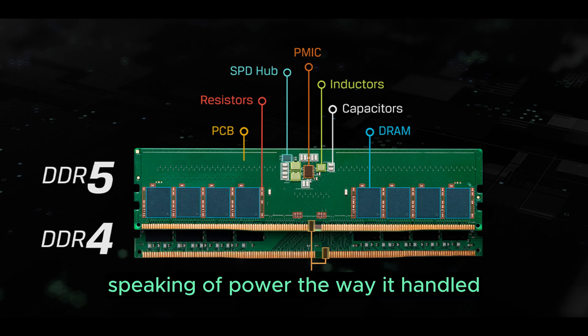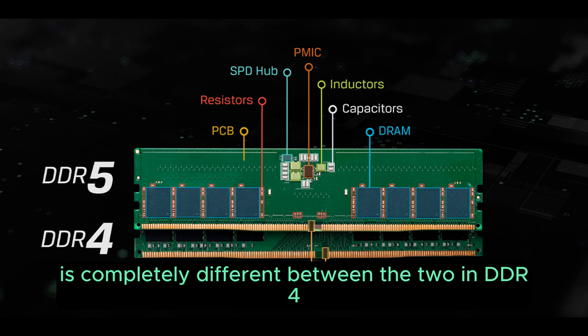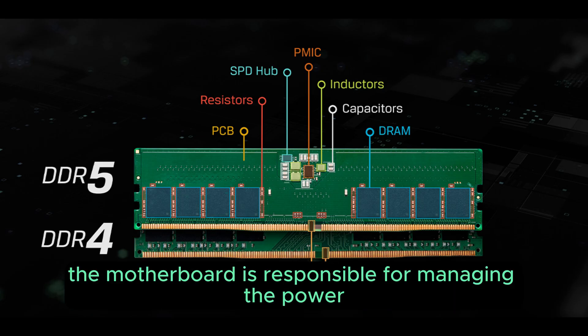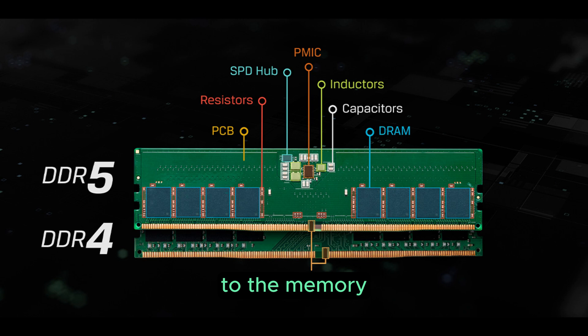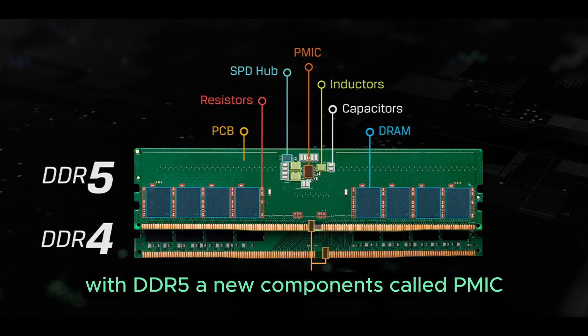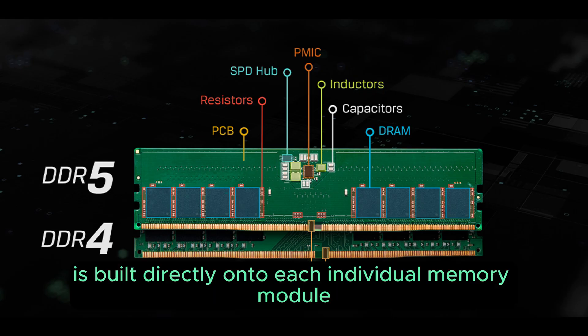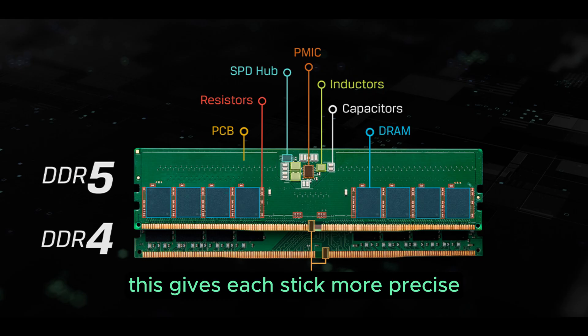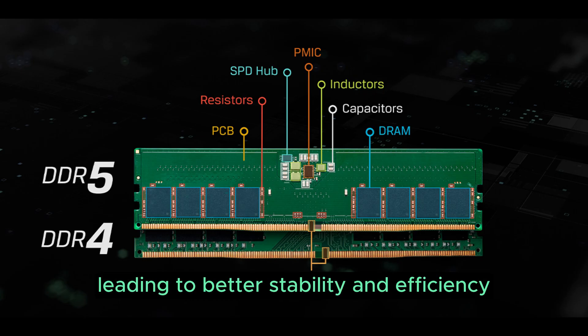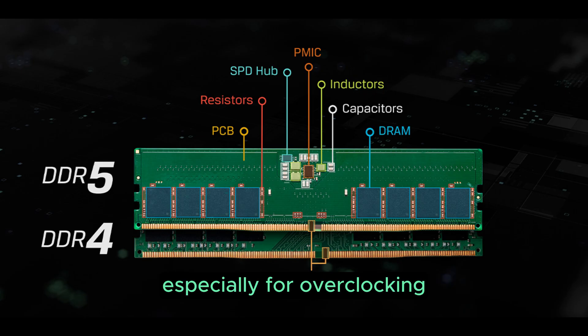Speaking of power, the way it is handled is completely different between the two. On a DDR4 system, the motherboard is responsible for managing the power to the memory. With DDR5, a new component called PMIC, or Power Management Integrated Circuit, is built directly onto each individual memory module. This gives each stick more precise and direct control over its power, leading to better stability and efficiency, especially for overclocking.